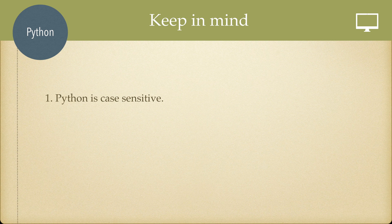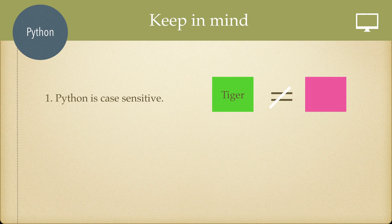Python is case-sensitive. That is, 'tiger' is not equal to 'Tiger'. We have a variable name — that name is 'tiger' in lowercase. In the first letter capitalized, the variable name is entirely different. Python is case-sensitive; it is very basic.